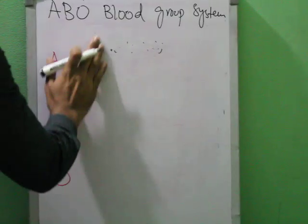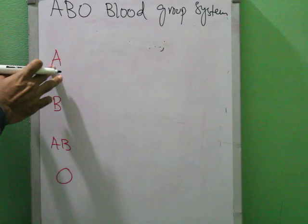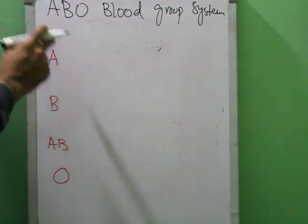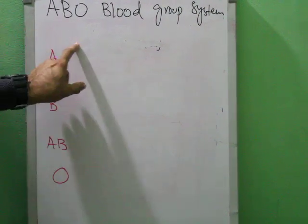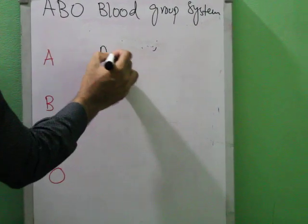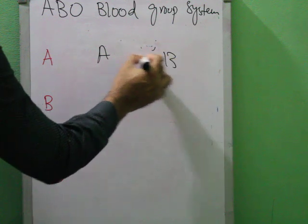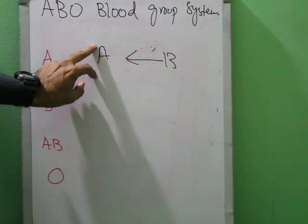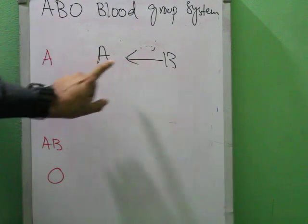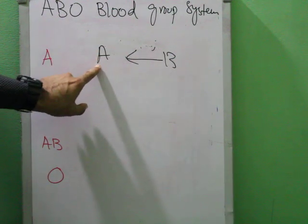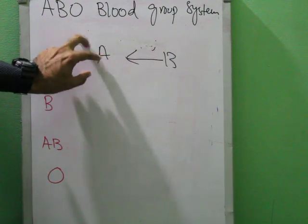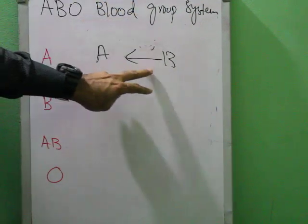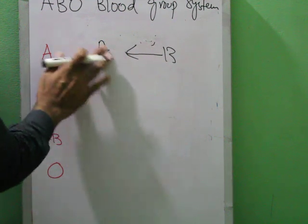Now let's discuss each blood group. If somebody's blood group is A, it means the antigen A is present on the surface of their RBCs. Blood group A cannot donate to blood group B, because blood group B does not have antigen A — there would be a mismatch.